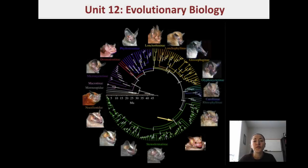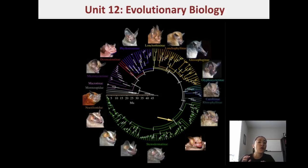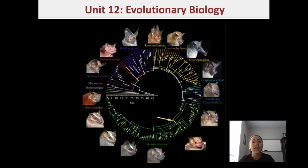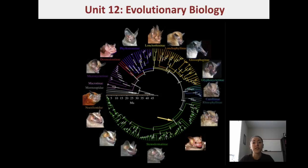This is a review for Unit 12 Evolutionary Biology. In this unit, you learned about two things. One is how populations change over time. Second, you learned about a principle called the Hardy-Weinberg Law, which is used by many population geneticists in order to understand how much a population has been changing.